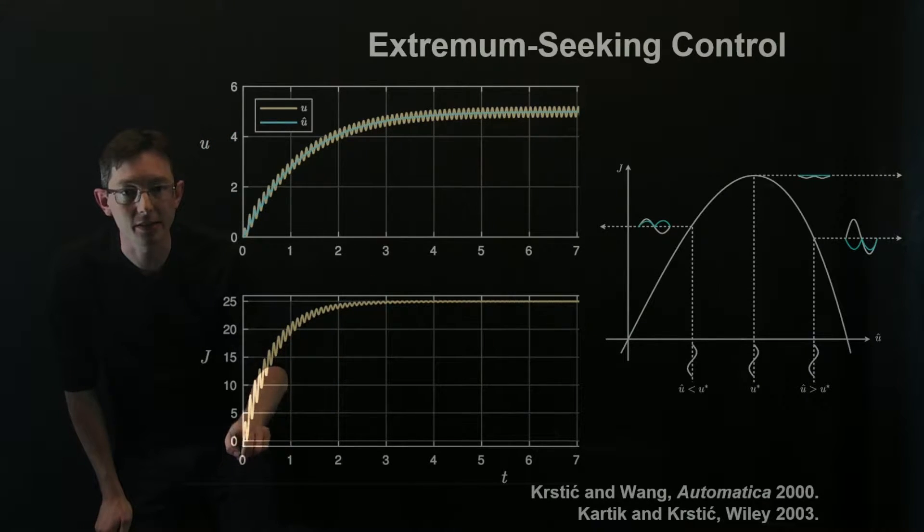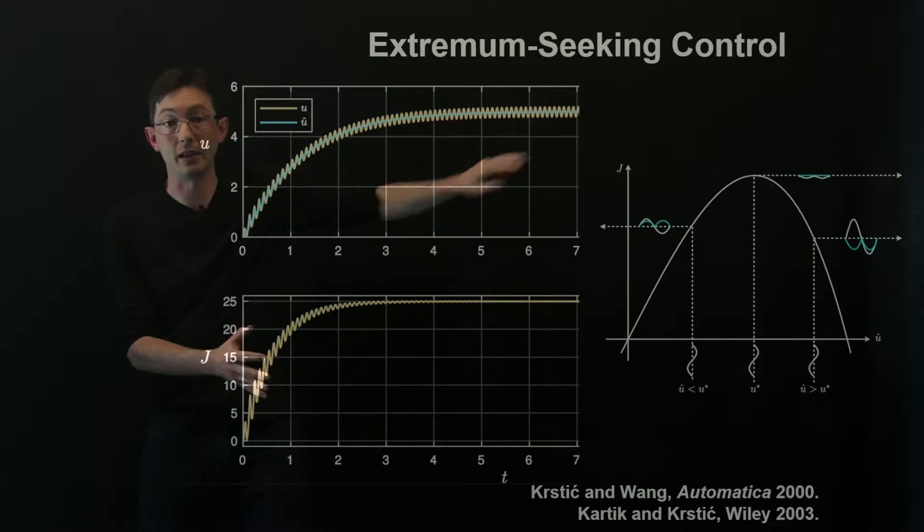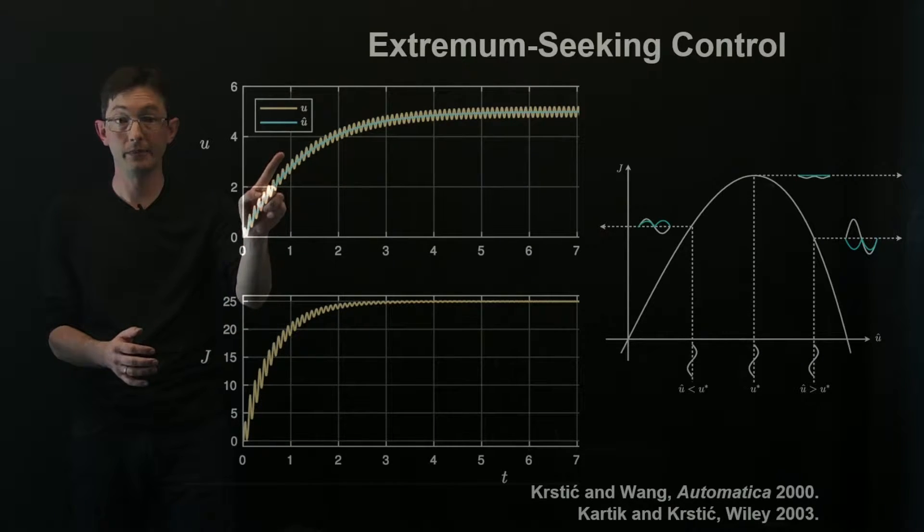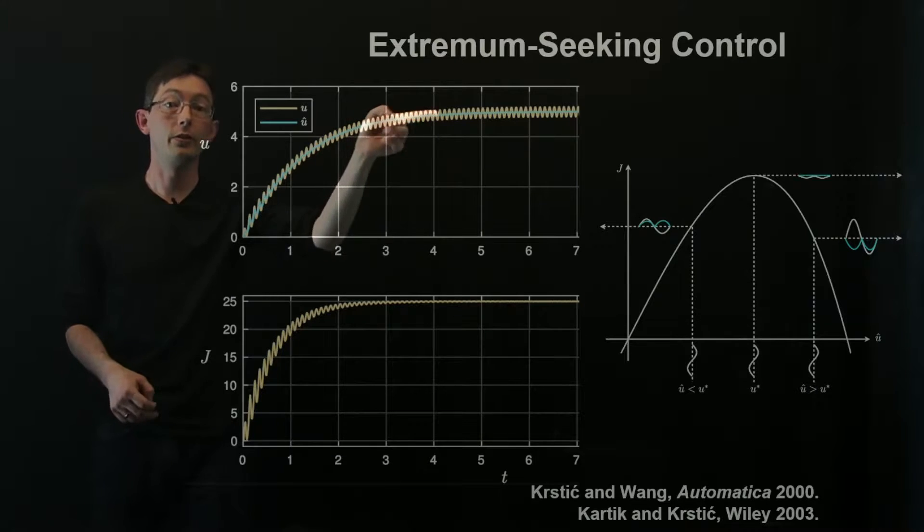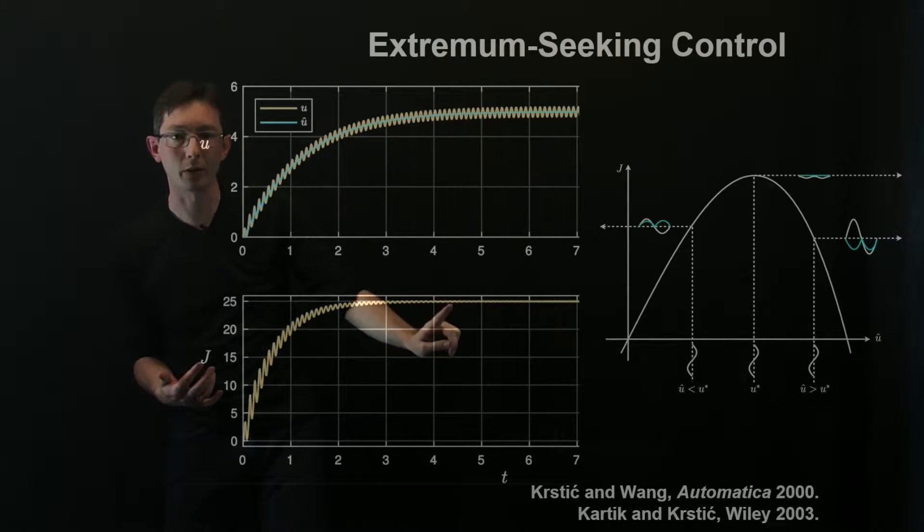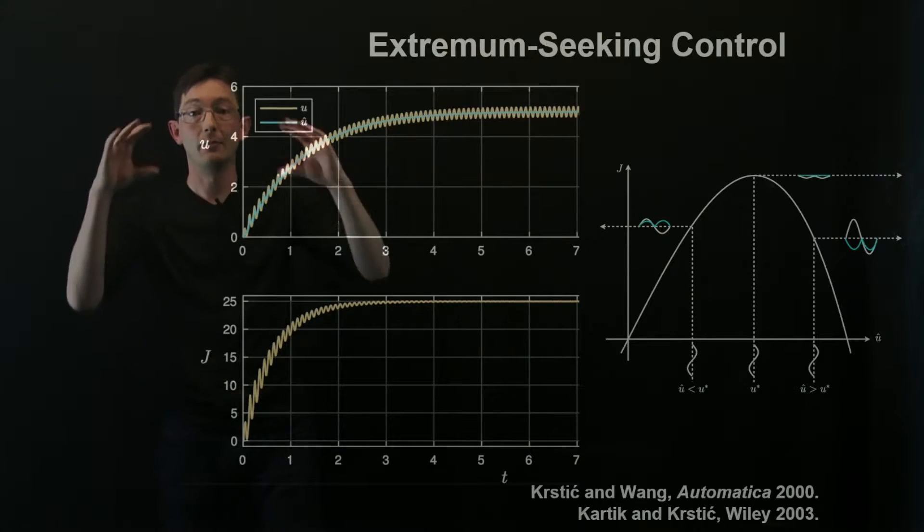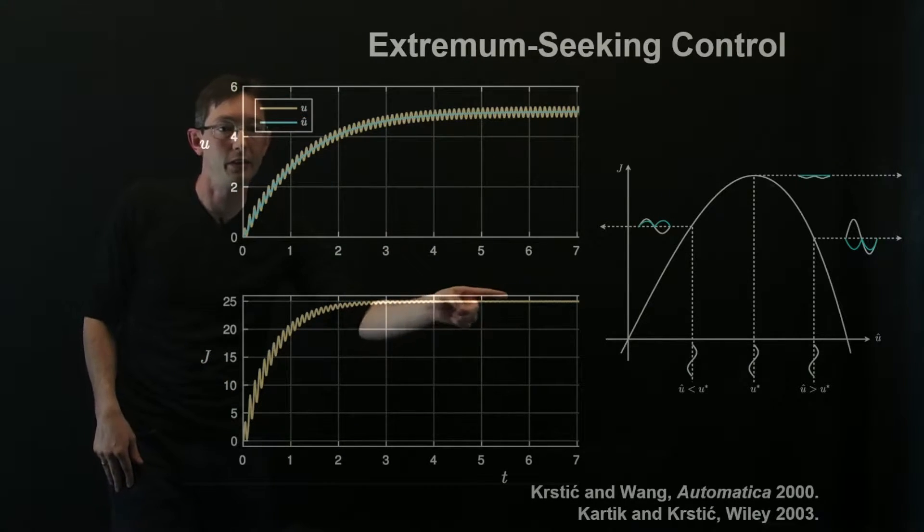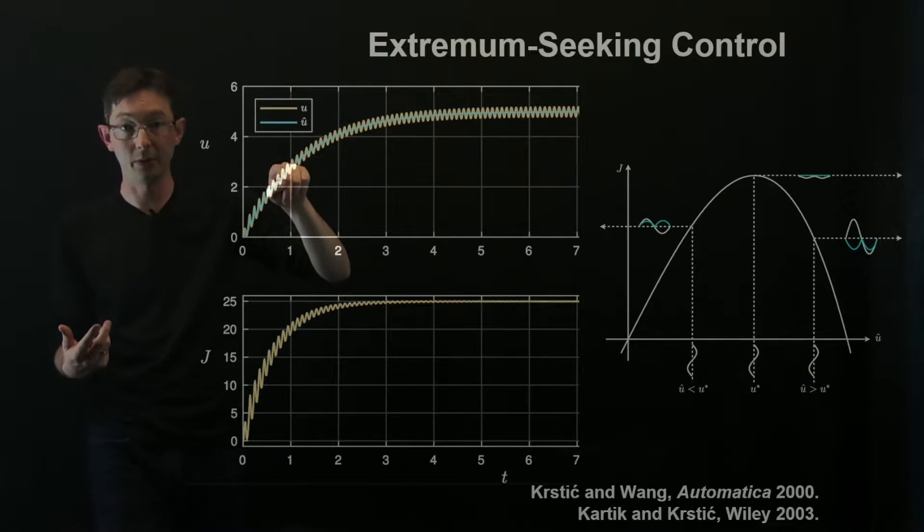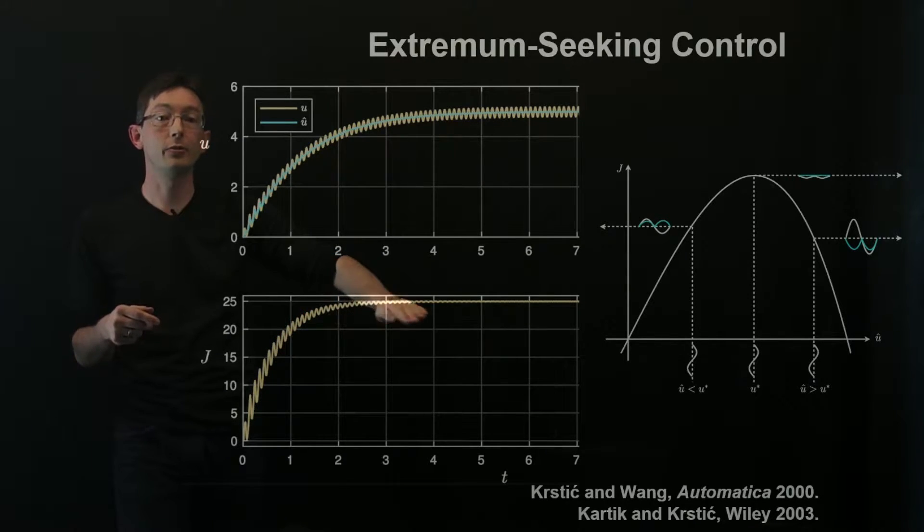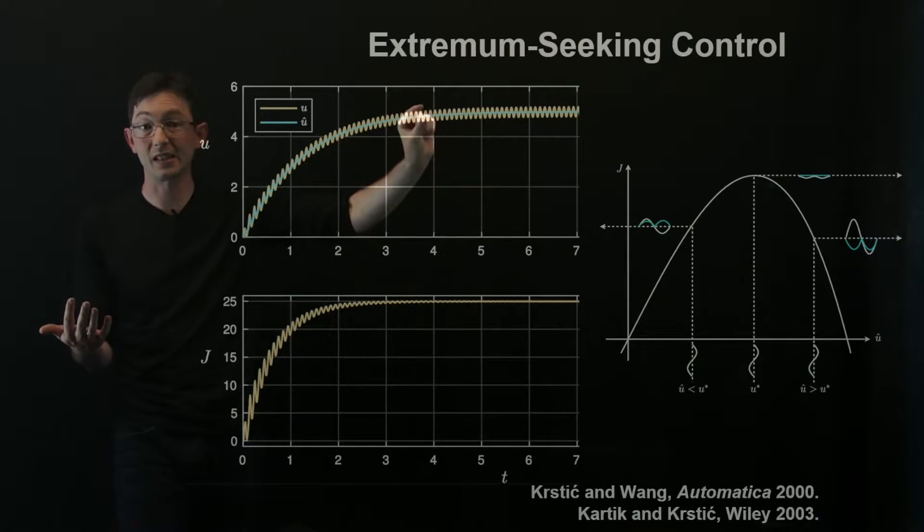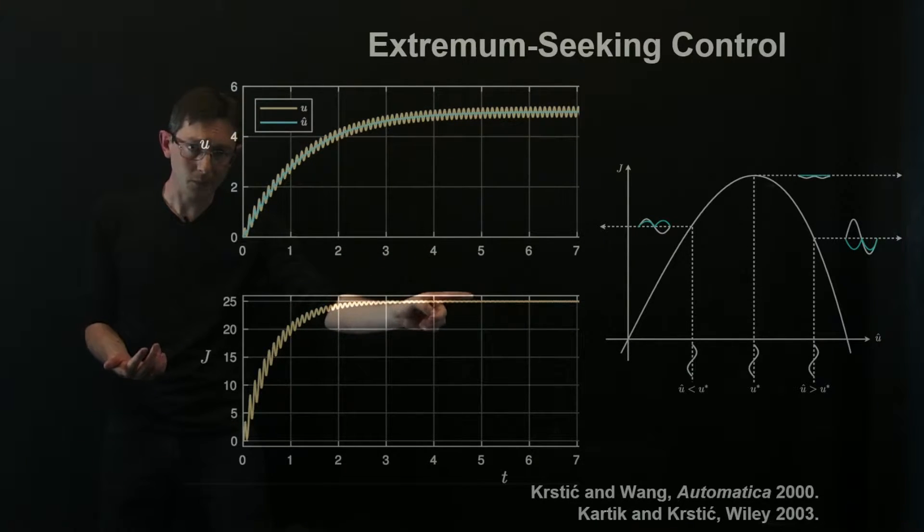One thing that's really interesting: notice that these oscillations in j are bigger the farther I am from the peak. So the higher the slope, the bigger the oscillations in j and the faster my u increases. And then as I get close to the optimum, u increases less rapidly because the slope is tailing off. Also notice that my perturbation output in j becomes very small. In fact it becomes on the order of a squared, where a is the magnitude of this input ripple.